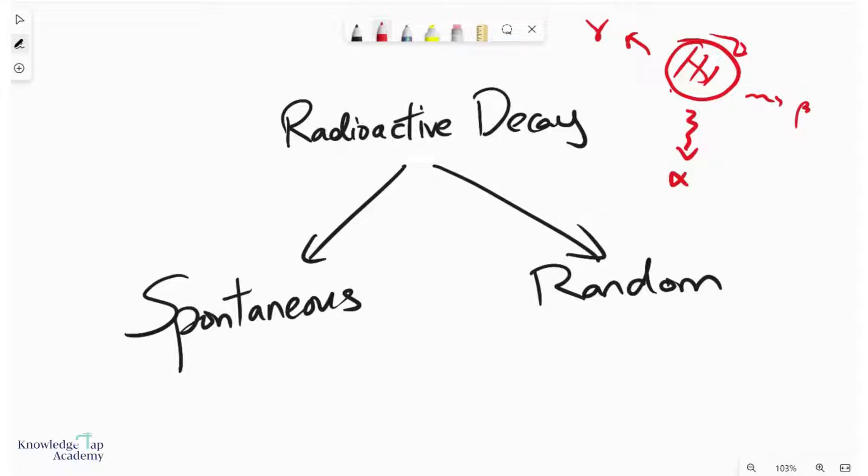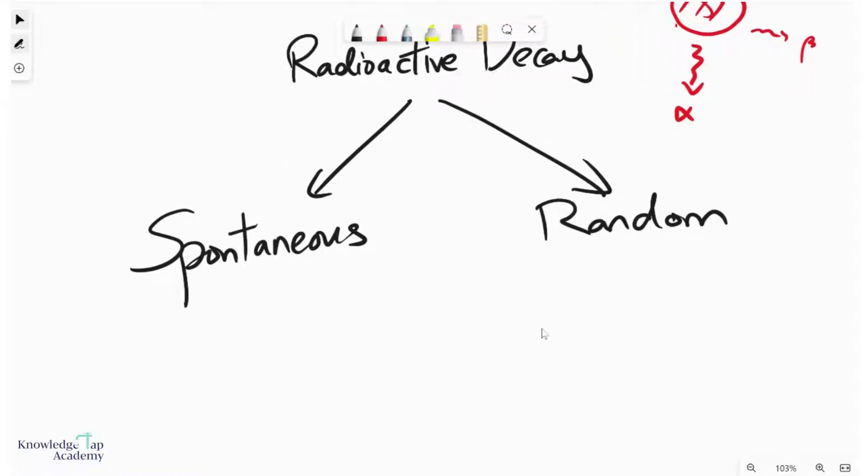We need to understand what these mean. To be a spontaneous reaction, you have to be unaffected by both physical and chemical conditions. Physical conditions mean things like temperature and pressure.